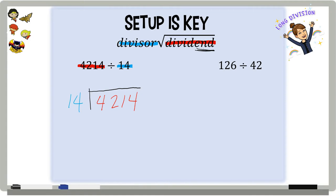So everybody inside the long division symbol is at the party. So they each need their own chair. So 4 gets a chair, 2 gets a chair, 1 gets a chair, and 4 gets a chair.